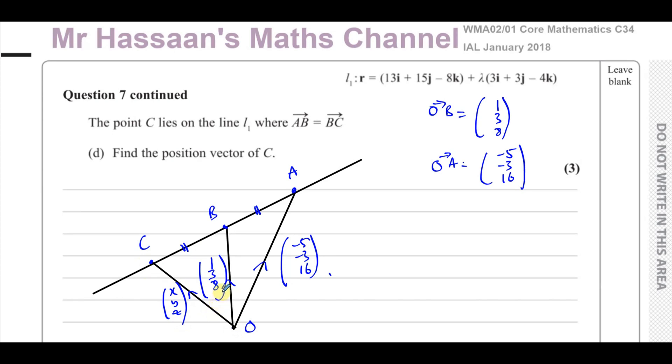What do I know? Well, I know how to go from B to A. B to A is going to be, if I go from B to O plus O to A, so it's like OA minus OB. That's going to give me minus 5, minus 3, 16, take away O to B, which is 1, 3, and 8. What does that give me? Minus 5 minus 1 which is negative 6. Negative 3 minus 3 which is negative 6. And 16 minus 8 which is 8. That's the vector from B to A.